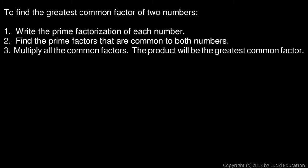You first find the prime factorization of each number, and then you find the prime factors that are common to both numbers, and then you multiply all of those together, and the result will be the greatest common factor. Now that might sound a little tricky, but it's not too hard, and it will be easier to see as an example.